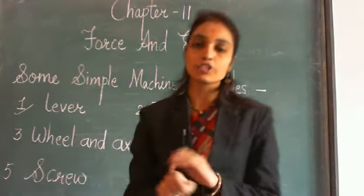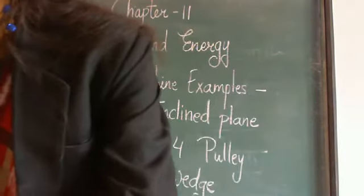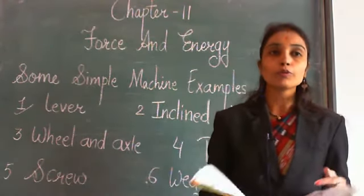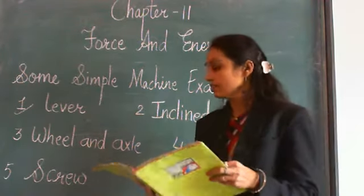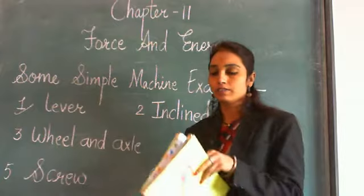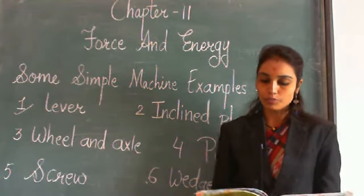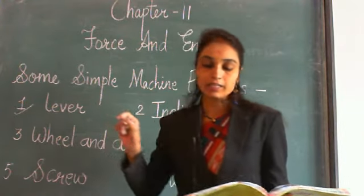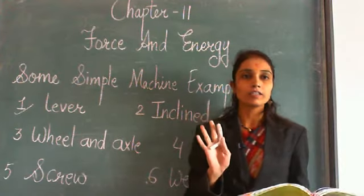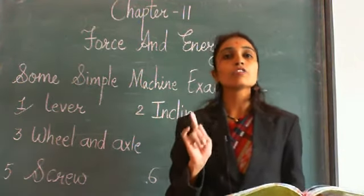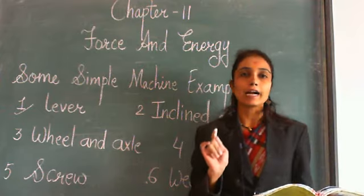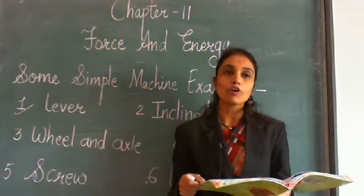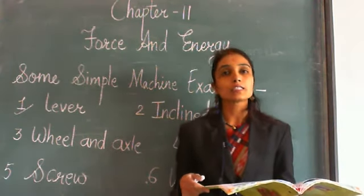What is a lever? A lever is a rigid rod which can turn around a fixed point called fulcrum, to move a load. Fulcrum is a fixed point about which the rod moves and it is always stationary.